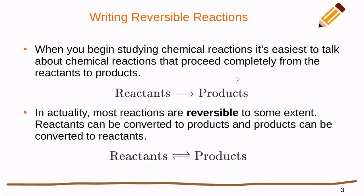When we first started studying reactions, it was convenient to talk about reactions that go completely from the reactants to the products. But this is an oversimplification of what typically happens. We don't have a situation where all the reactants get consumed and produce products.